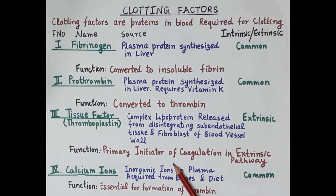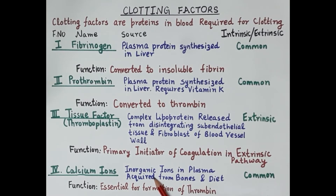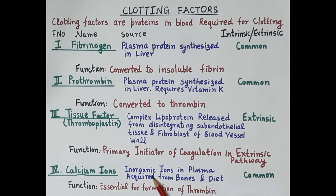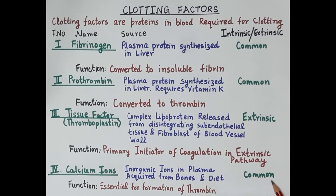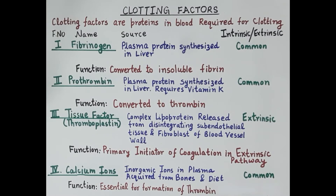The fourth clotting factor is calcium ions. These are inorganic ions in the plasma, and calcium is acquired from bones and diet. Calcium is common for both the extrinsic and intrinsic pathways, and these calcium ions are essential for the formation of thrombin.